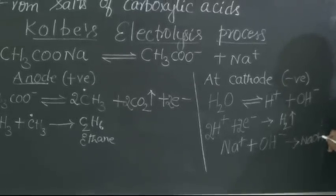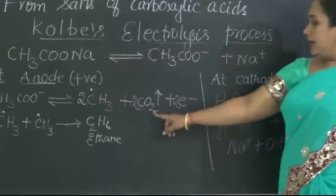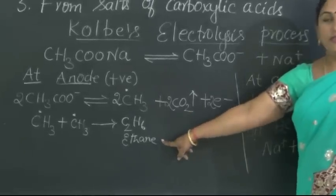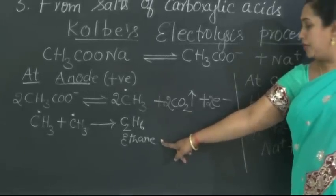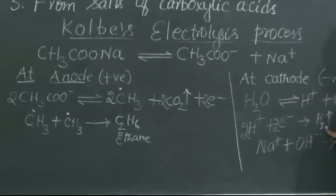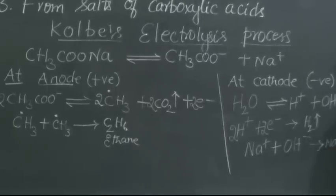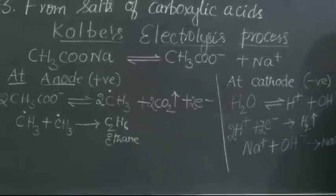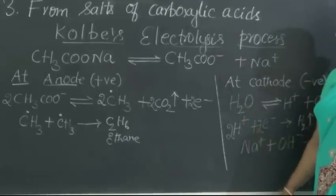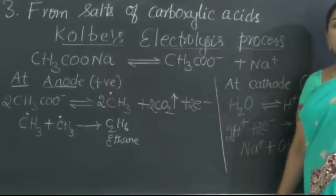So, what are all the things obtained by this process of electrolysis? At anode, carbon dioxide is liberated along with the formation of ethane, the required alkane for us. So, this is a very important phenomenon by which we get so many important by-products along with the alkane.